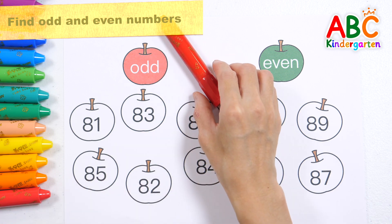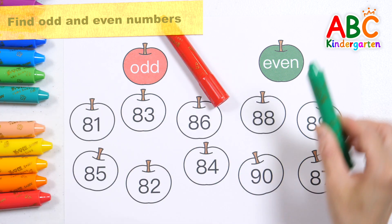Look at the apples with numbers written on them. Color the odd apples red and the even apples green.